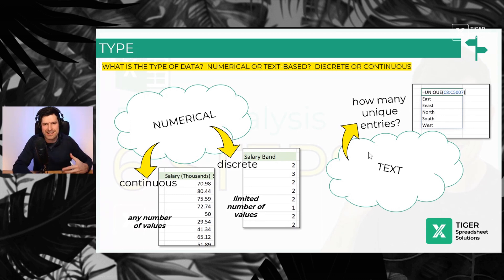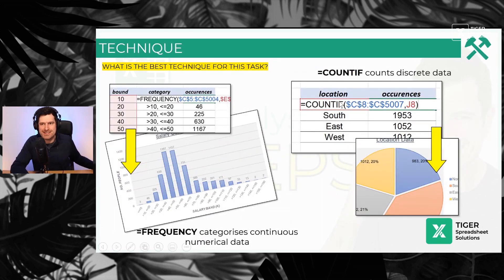If you're using text, then it's a little bit simpler. A great first step is to use the UNIQUE formula or remove duplicates to find how many unique entries are in your data set. So with that said, we've done objectives, the location of the data, the quality of the data, the type of data. Only then can we go on to select a technique.